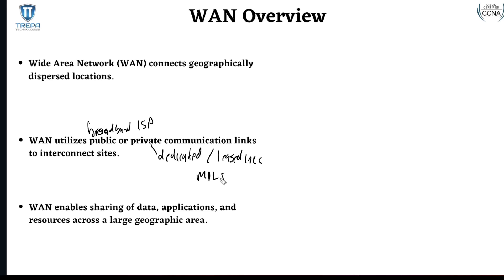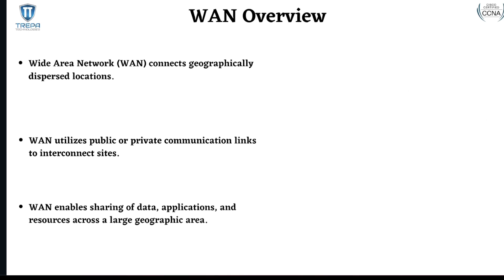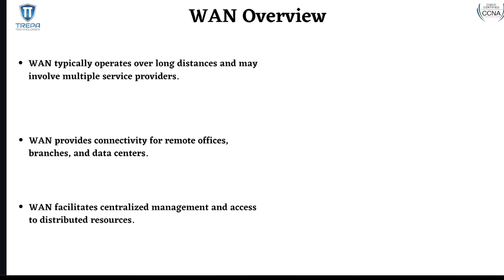A WAN, or Wide Area Network, enables the sharing of data, applications, and resources across a large geographic area. For example, my office in Arizona connected to a headquarters office in New York is a WAN connection — whether it's a VPN tunnel, MPLS, or an actual dedicated T1 line. These WAN connections connect geographically dispersed LANs; the local area networks on each end need to access each other all the way across the country or globally.